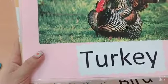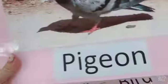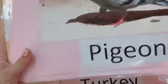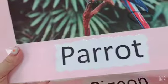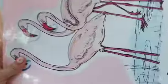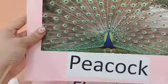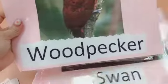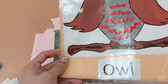Okay. Can you say again one more time? Say loudly: Turkey. Pigeon. Hen. Parrot. Goose. Duck. Flamingo. Peacock. Swan. Woodpecker. And owl. That's all. Thank you.